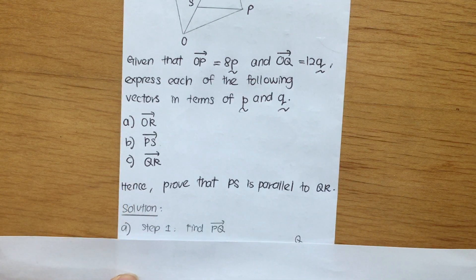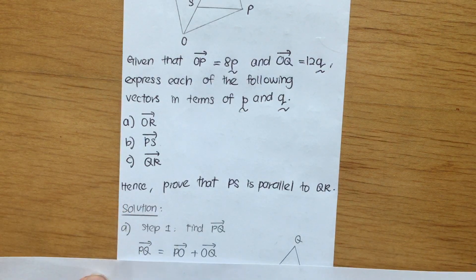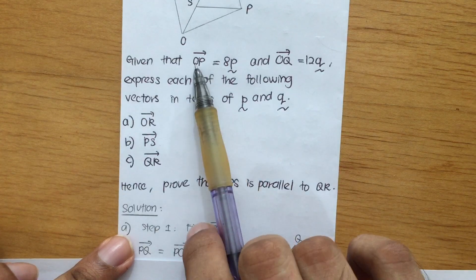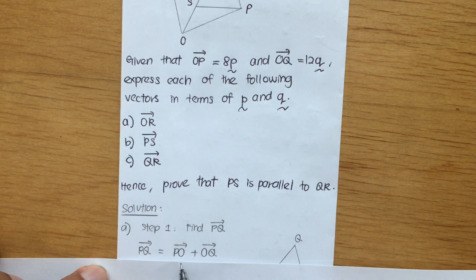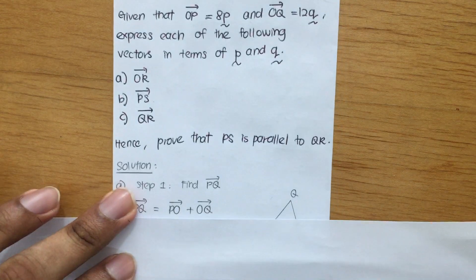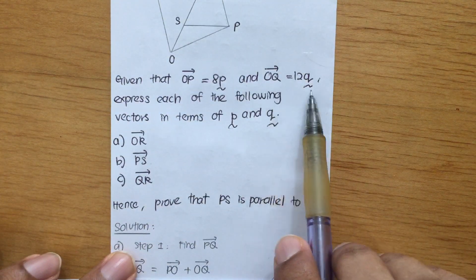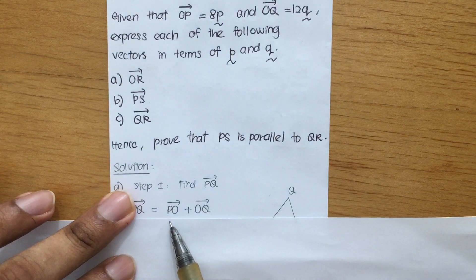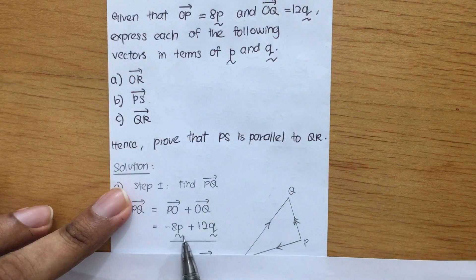For the first step, we are going to find Vector PQ in order to find Vector OR. Vector PQ is equal to Vector PO plus Vector OQ. In the question, they give us Vector OP equal to 8p, so Vector PO is in the opposite direction, which is negative 8p. Vector OQ is given as 12q. So when you add them together, Vector PQ equals negative 8p plus 12q.